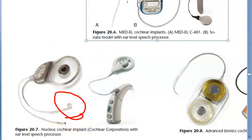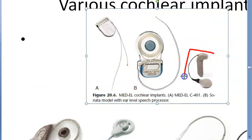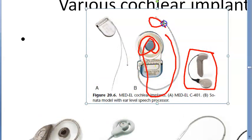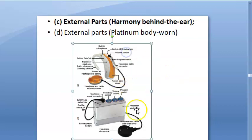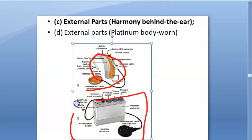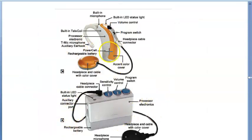Looking at the two wires - why are they there? There is the external part and the internal part; the internal part will become the electrode array spiral. From another textbook: external parts include behind-the-ear and body-worn models. The behind-the-ear one you can know by the shape; the body-worn one has a slightly longer wire. Looking at the parts: battery - you can put a rechargeable battery - volume control, LED status light, built-in microphone.